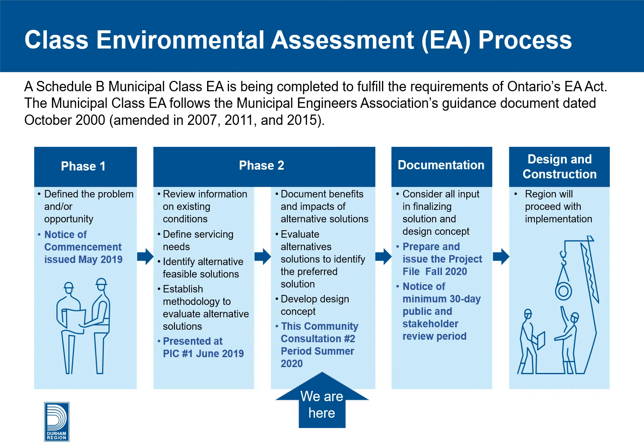Phase two involved reviewing information on existing conditions, defining servicing needs, and identifying alternative feasible solutions and establishing a methodology to evaluate them. This information was presented at the first public information center open house held in June 2019 at the Port Perry library. Materials from that open house are on the project webpage. The alternative solutions were further developed after that meeting, and input received from the community was used to help evaluate the alternatives and recommend a preferred solution.